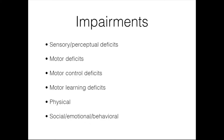There are a number of impairments commonly associated with DCD. First, we often see sensory and perceptual deficits — children with DCD manage visual feedback differently and process it more slowly. We see deficiencies in kinesthetic processing, poor proprioceptive function, and heavy reliance on visual feedback. Motor deficits are also present: children tend to move awkwardly with slow, jerky, or rigid movements, frequently bump into people and objects, and often trip, fall, and have poor balance.